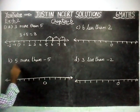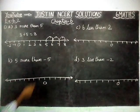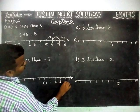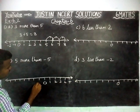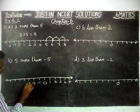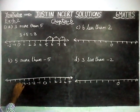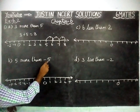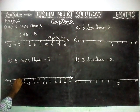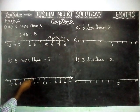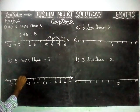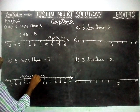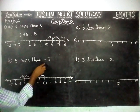Next, part (b): 5 more than minus 5. On the number line, right hand side positive numbers: 1, 2, 3, 4, 5; left hand side negative numbers: minus 1, minus 2, minus 3, minus 4, minus 5, minus 6, minus 7. We start from minus 5. Since it is 5 more, we add 5 — moving right: 1, 2, 3, 4, 5. When we move 5 steps we reach 0.